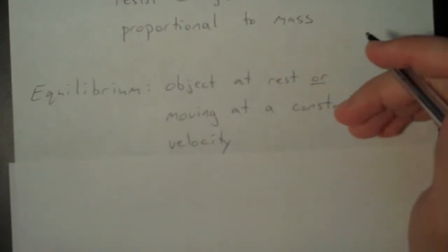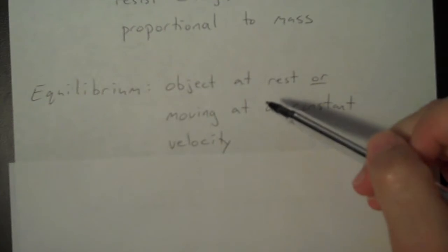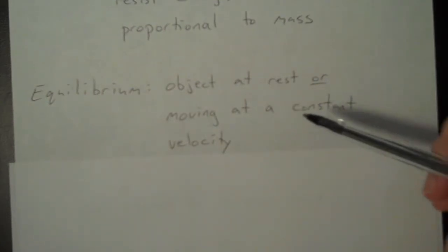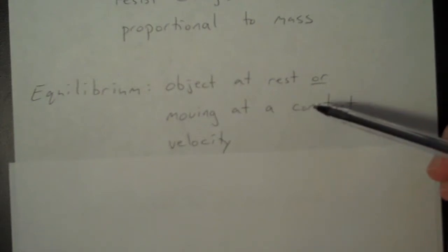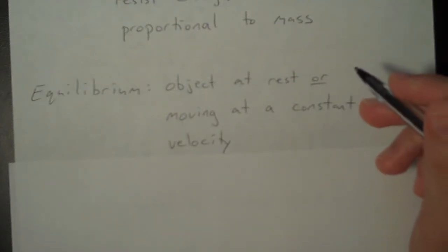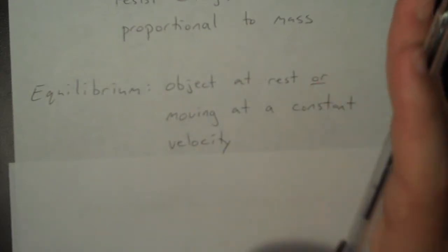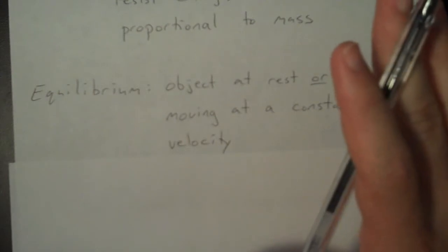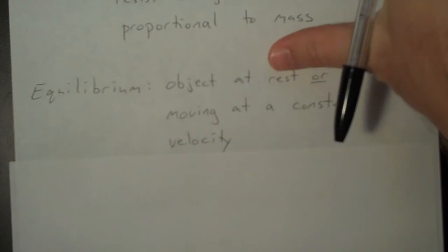And one more vocab word is equilibrium. And we're going to use that word a lot in this class, so it's important that we know what it means. An object is in equilibrium if it is at rest or it is moving at a constant velocity. So basically you are in equilibrium if the net forces acting on you are zero. So it's important to make that distinction. You can have forces acting on you, but they have to add up to zero for you to be in equilibrium.